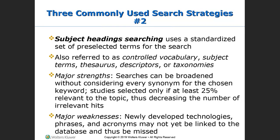Another strategy you could use is subject heading searching, which uses a set of preselected terms — commonly referred to as controlled vocabulary. That means they pick out similar words in the descriptors and taxonomies for you. The strength of this search is that it can be broadened without considering every synonym for the chosen keyword, and studies are only selected if at least 25% of those topics will be relevant, decreasing the number of studies you get. A major weakness is that this is a newer technology and it might not be 100% accurate yet, but it will sharpen the information you get.